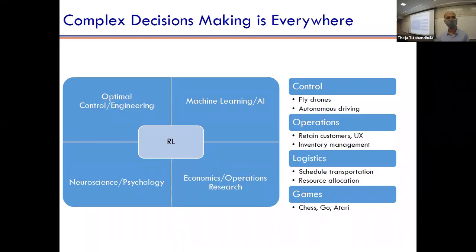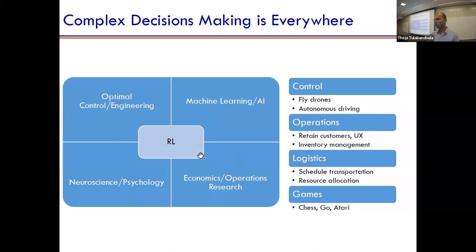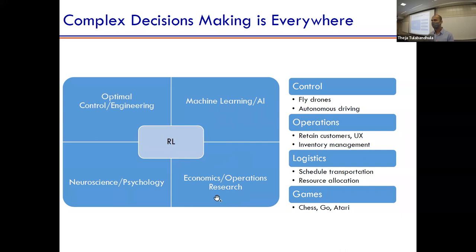Complex decision making is just an informal way to say there are things beyond perception or beyond forecasting. Several fields focus on decisions, not just machine learning or statistics: optimal control in engineering, economics, and operations research all have a big focus on policies — actionable things you can do.